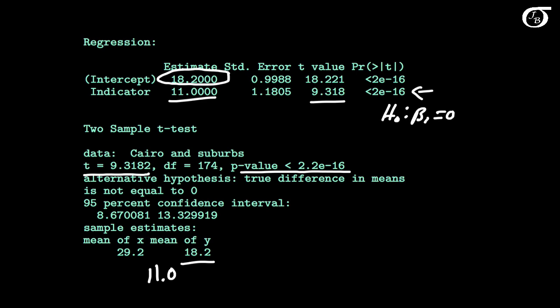And if we wanted a confidence interval for beta 1, well that would simply be the same as the confidence interval for the difference in population means. So these two procedures are equivalent.